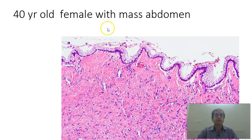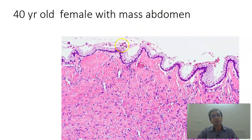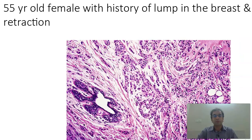Next, a 40-year-old female with a mass abdomen. What you find here is that this is a cyst. Usually in a female patient with mass abdomen, think of the ovary. You have nice mucinous glands at one end and a lot of mucin within them. So this is likely to be a mucinous cystadenoma of the ovary.